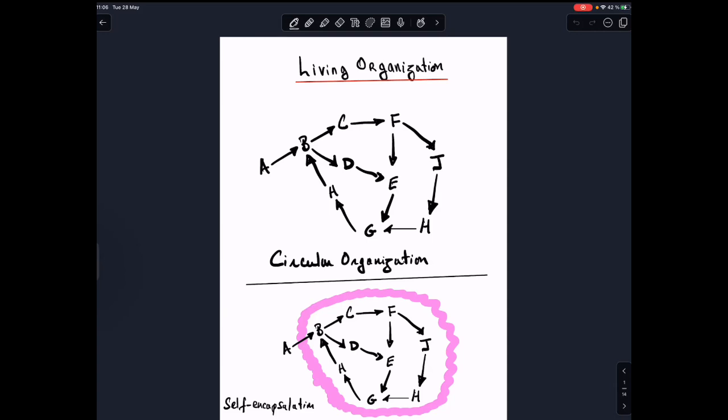And the other idea is that this network, by its very functioning, produces self-encapsulation. And that this is the secret, according to Maturana and Varela, this autopoietic organization is the real secret of biological systems.